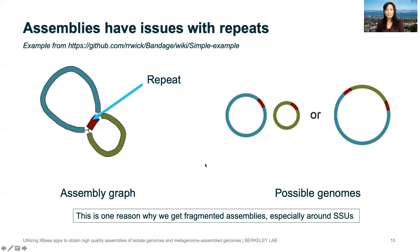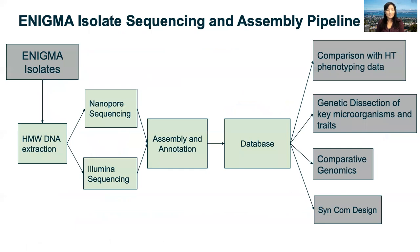This is one reason why assemblers produce fragmented assemblies — they will not circularize if they're not sure which of the three possibilities is correct. This happens especially if you have multiple SSU copies. If you have long reads, which I'm simulating here with this yellow line, and a long read spans the repeat, then you know you have to have this blue part and this green part in the chromosome. This illustrates how long reads can help with finishing assemblies.